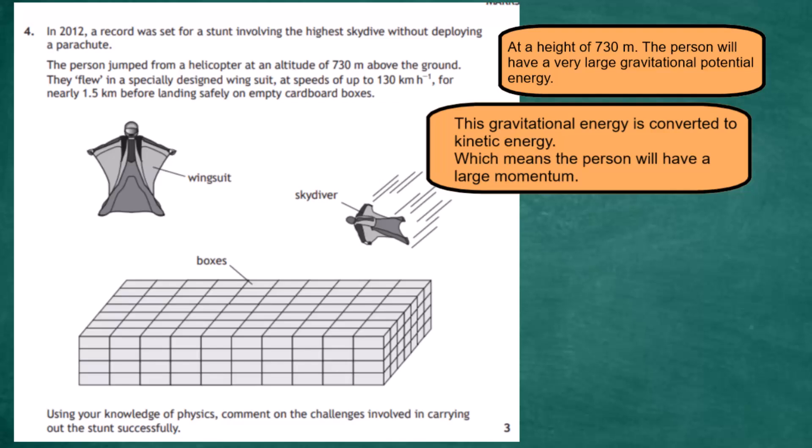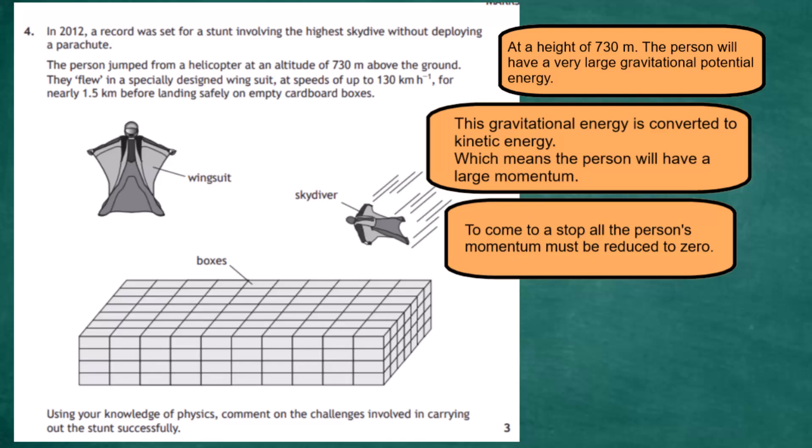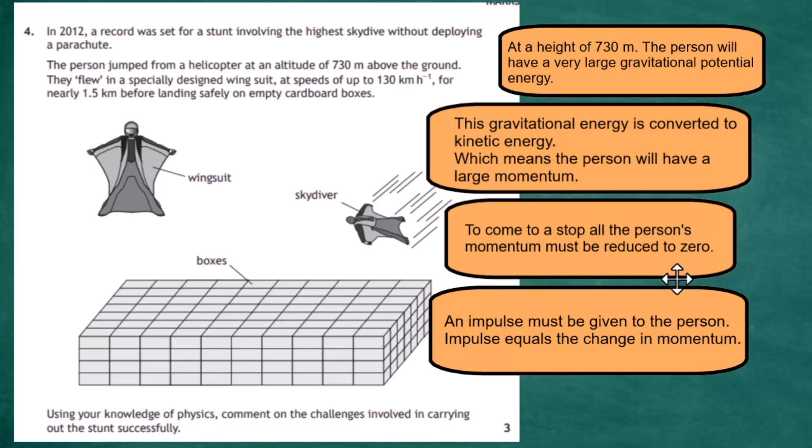There's our input, there's our key to get in there: the large value of the speed is going to give a large value of momentum, and you must change that momentum to zero. Now, to come to a stop, you have to tell the examiner that you must reduce that person's momentum to zero. That's the key fact here. How is that done? It's done with an impulse. An impulse must be given to the person in order to change the person's momentum from that high value to zero, bringing a person to a stop.